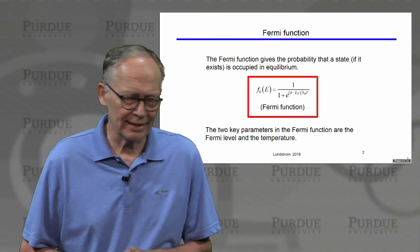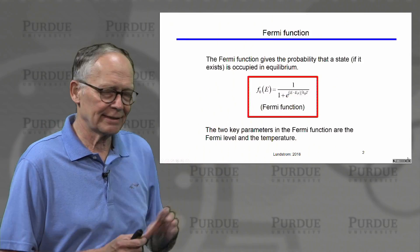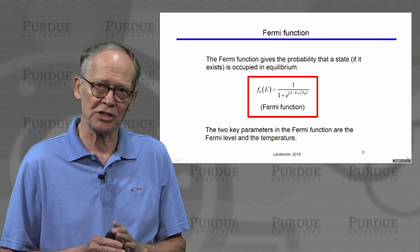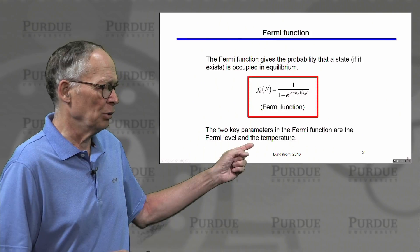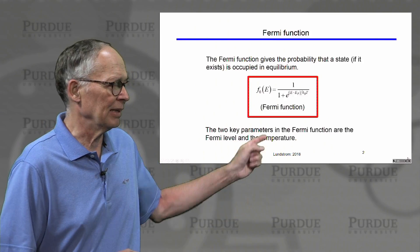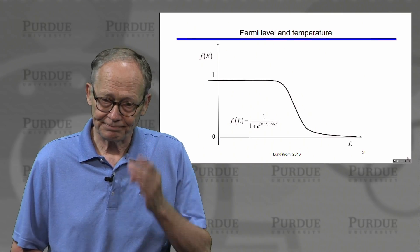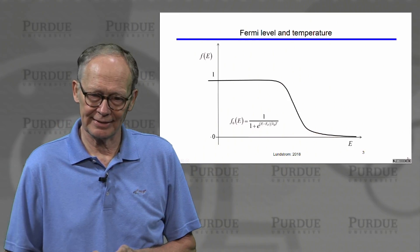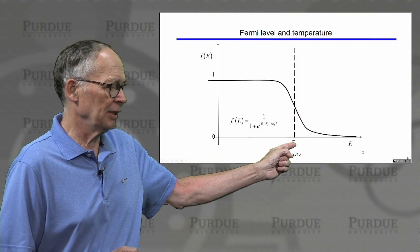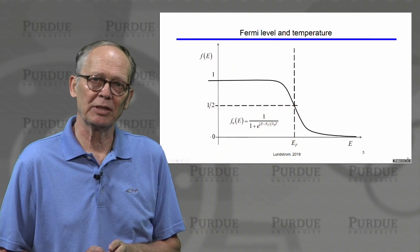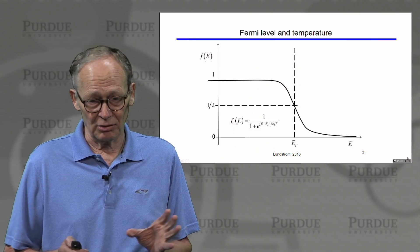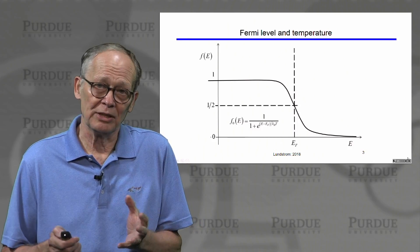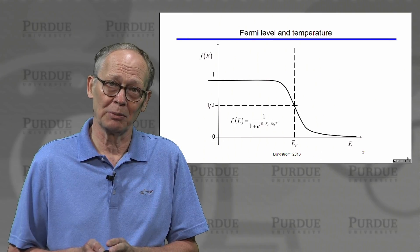We began the unit by discussing the Fermi function. The Fermi function is a simple equation that gives us the probability that a state, if it exists at a particular energy E, is occupied by an electron. The two important parameters in the Fermi function are the Fermi level E_f and the temperature. If we plot the Fermi function, the probability is between 1 and 0 depending on the energy of the state. If the energy is equal to the Fermi energy, the probability is 50% that the state will be occupied. Notice that if the Fermi level is in the band gap — the forbidden gap — there are no states, so there will be no electrons there even though the Fermi function gives a probability of one-half.